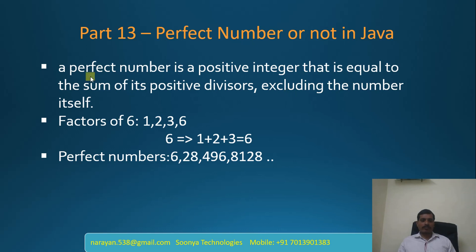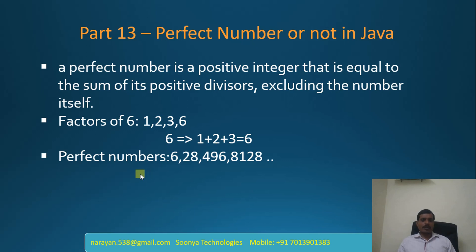What is a perfect number? A perfect number is a positive integer that is equal to the sum of its positive divisors excluding the number itself. For example, the factors of 6 are 1, 2, 3, and 6. We sum the factors excluding 6: 1 plus 2 plus 3 equals 6. Since 6 equals 6, 6 is a perfect number. A few examples of perfect numbers are 6, 28, 496, and 8128.